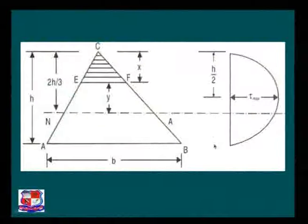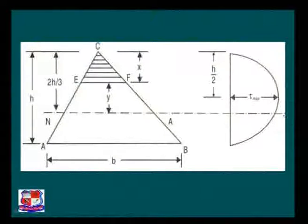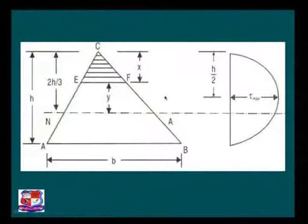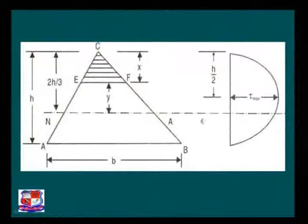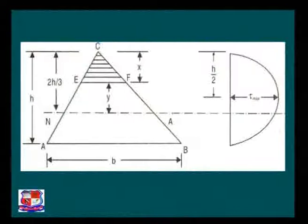The shear stress distribution diagram shows zero at the apex, zero at the bottom fibers, a certain value at the neutral axis — but it is not maximum. This is an important and interesting point for triangular sections only. Unlike all other sections where maximum shear stress occurs at the neutral axis, for a triangle the maximum shear stress is at height H/2 from the apex or base.